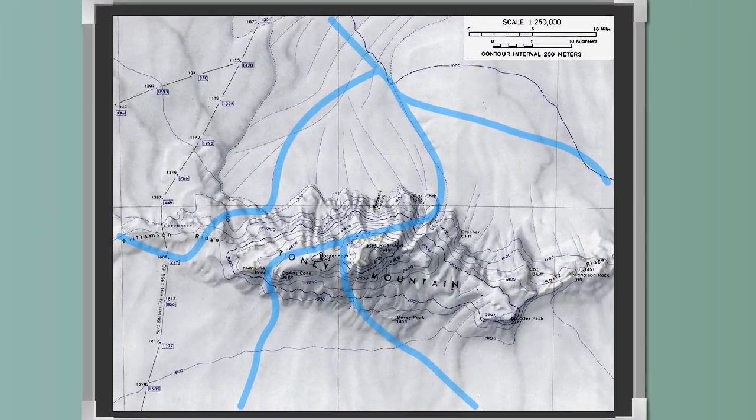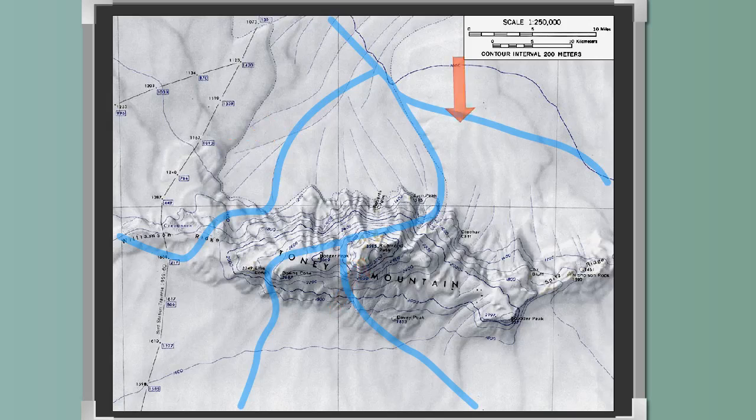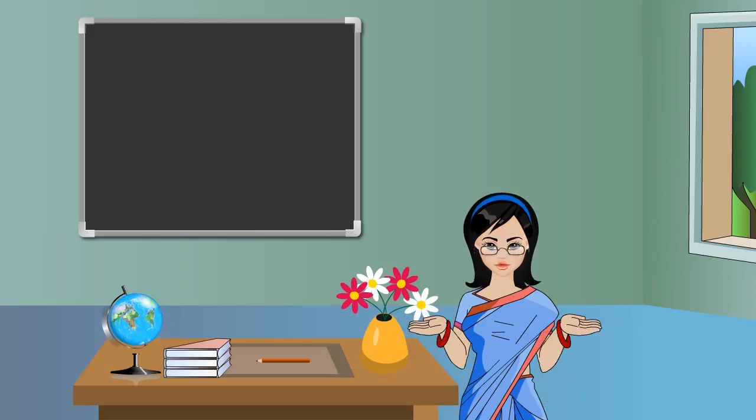It also shows features such as rivers, mountains, plateaus, deserts etc. Maps are of many types.